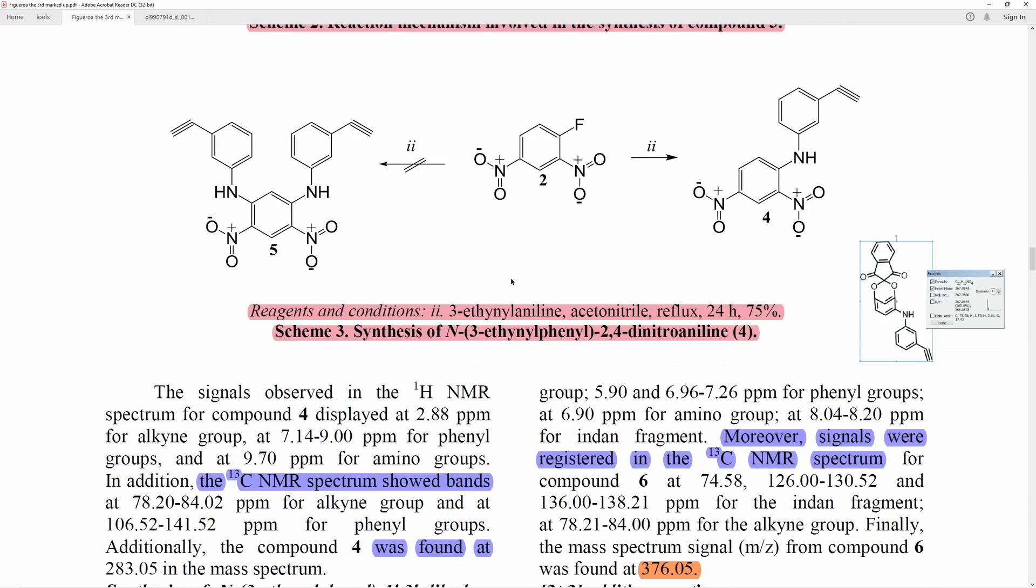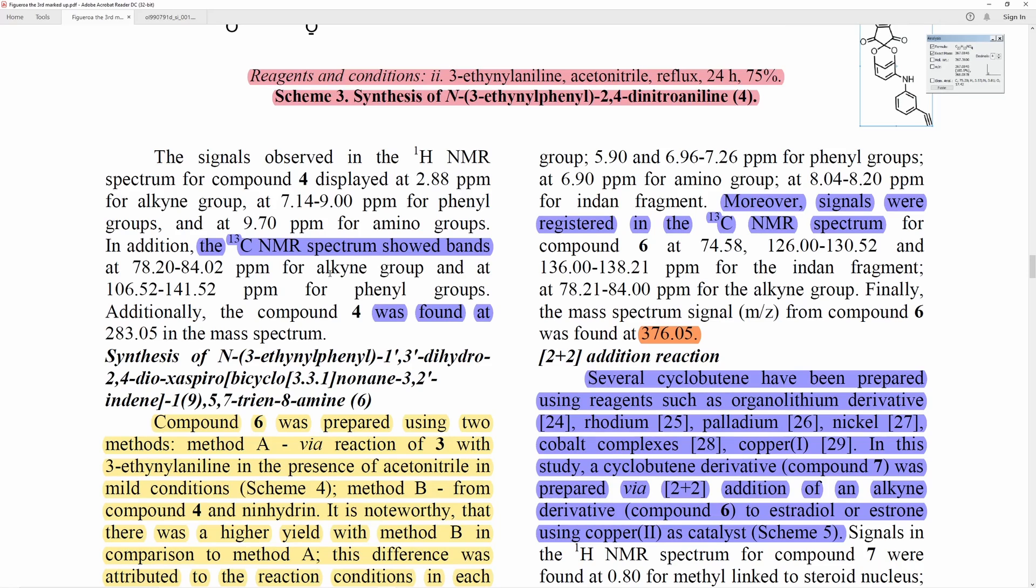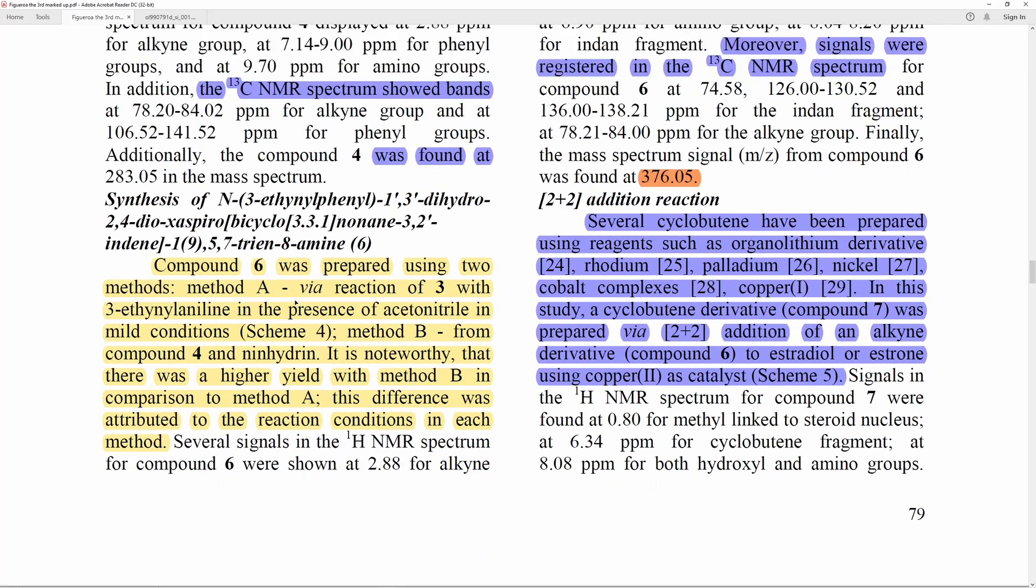There's a couple other concerning statements here. You can see he was looking at the NMR for one of the compounds, and the 13C NMR showed bands. Now, I'm not familiar with seeing bands in a carbon NMR. If you've ever seen bands in a carbon NMR, I definitely want to know about it. And he wasn't sure where compound 4 was, but he found it at a specific mass in the mass spectrum. So he did find it. He found the compound. He looked exactly where it would show up, and he found it. Good for him.